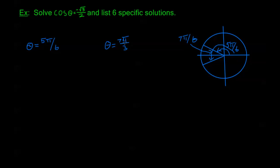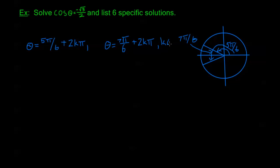Just like in the last problem, once we have these particular solutions, we can say: if 5 pi over 6 is a solution, then 5 pi over 6 plus 2k pi is also a solution, because cosine has a periodicity of 2 pi. If 7 pi over 6 is a solution, then 7 pi over 6 plus 2k pi is also a solution. Both of these hold for all values of k in the integers.